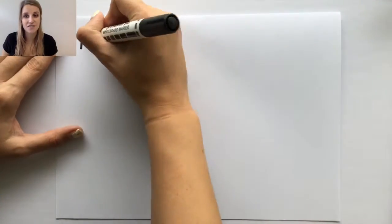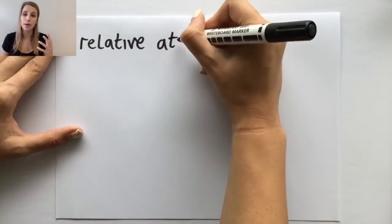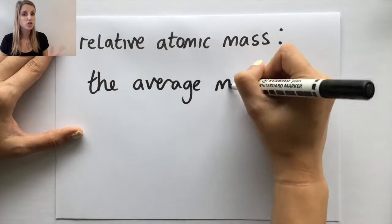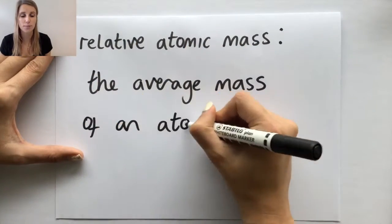As normal, we'll start with the definition. So relative atomic mass is the average mass of an atom compared to 1/12th of the mass of carbon-12.